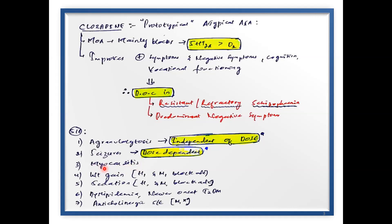Other adverse effects of Clozapine include weight gain due to H1 blockade, and sedation also due to H1 receptor blockade. Dyslipidemia and new-onset type 2 diabetes mellitus are also seen. Regarding dyslipidemia, the important component is an increase in triglycerides. This occurs because of insulin resistance due to involvement of multiple 5-HT receptors, leading to increased lipolysis, raised free fatty acid levels, which serve as a source for triglyceride synthesis. Anticholinergic side effects also occur due to M1 receptor blockade.